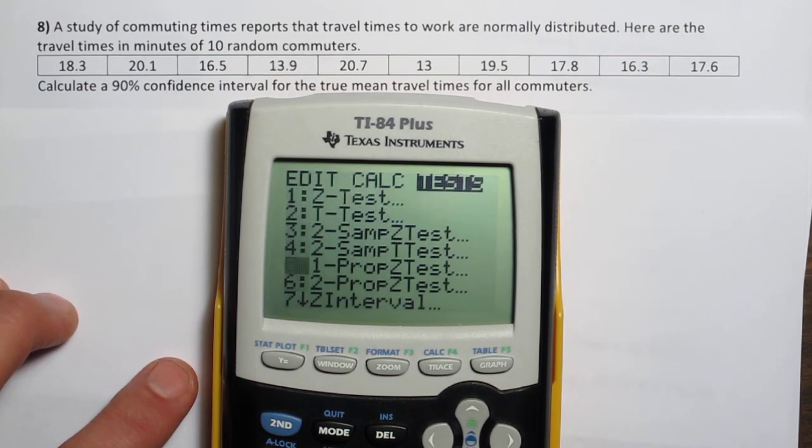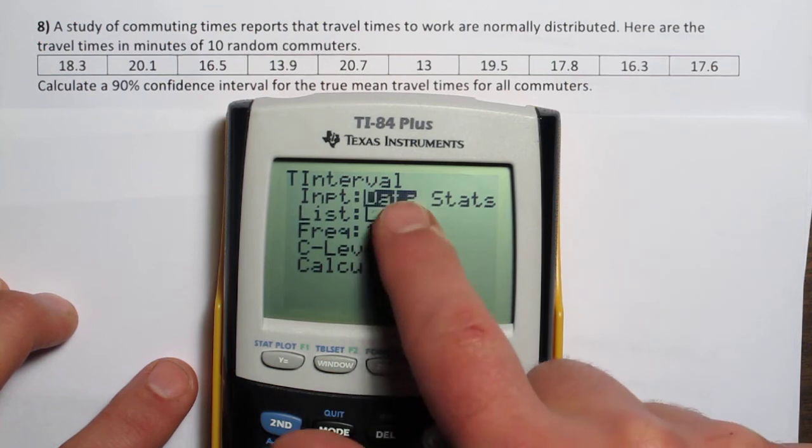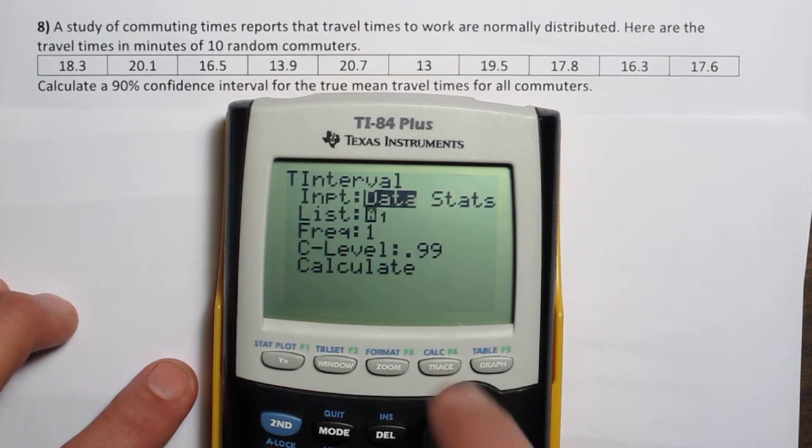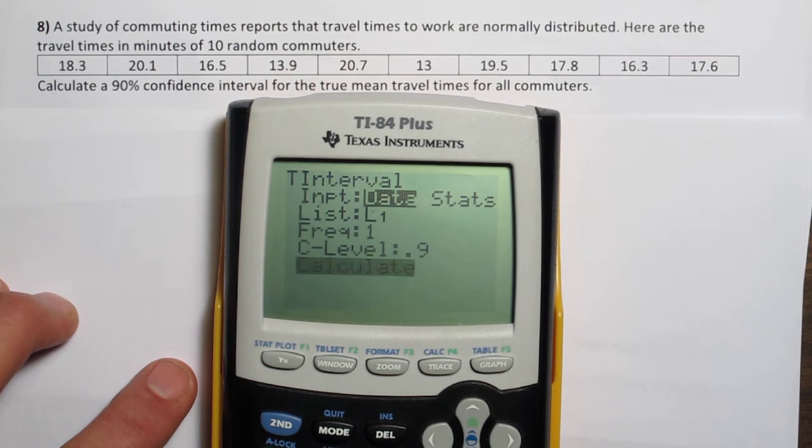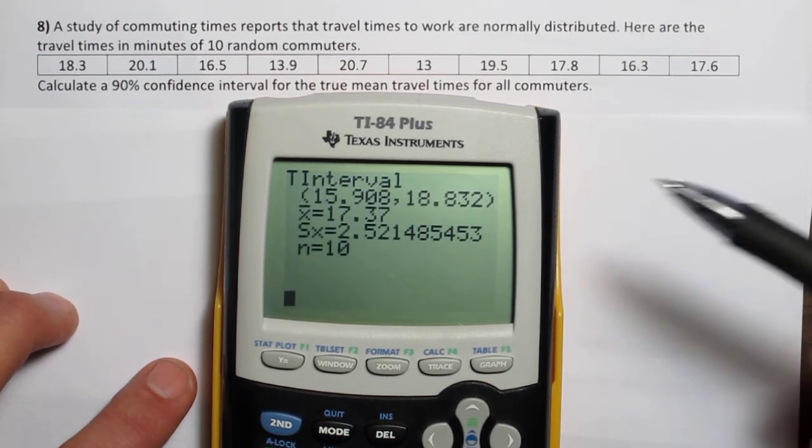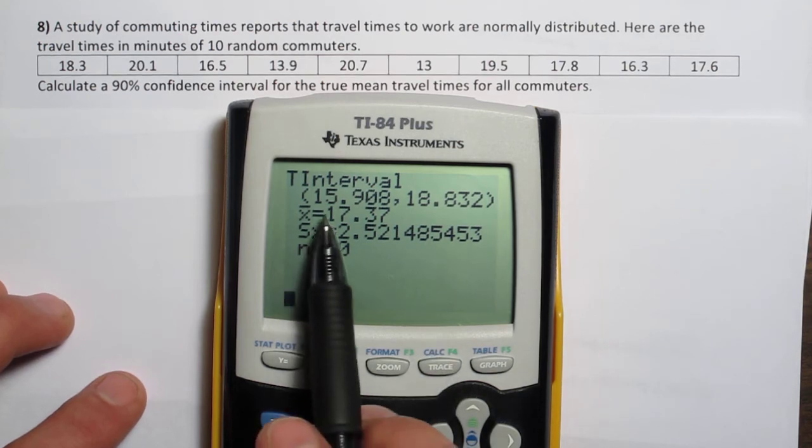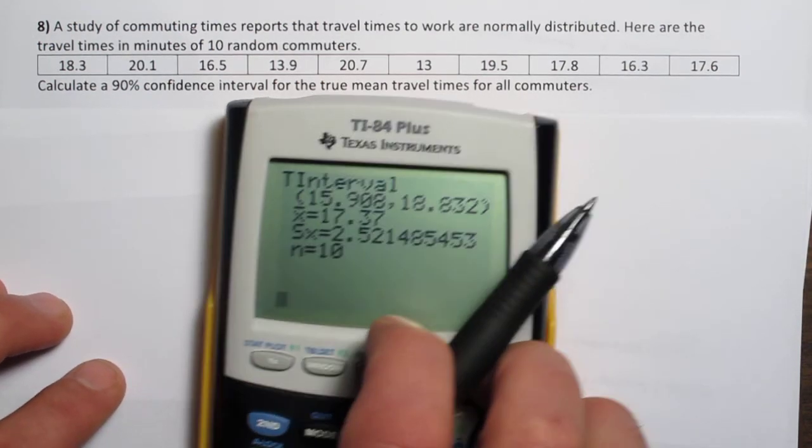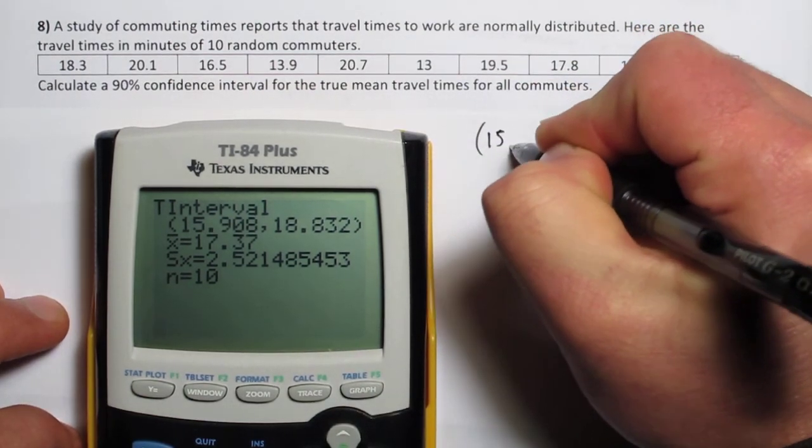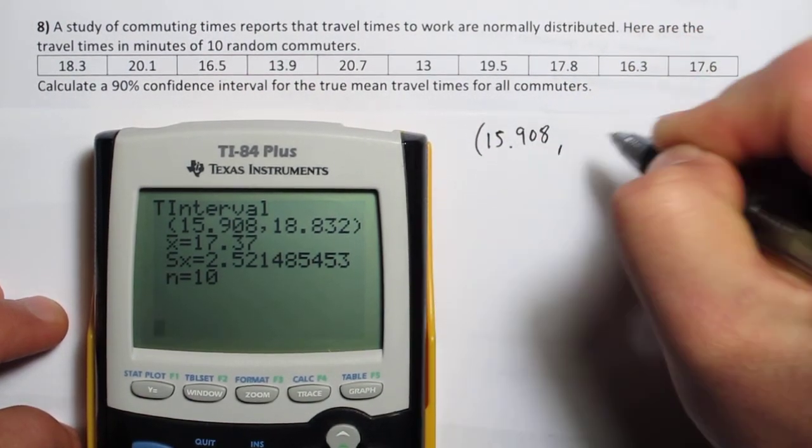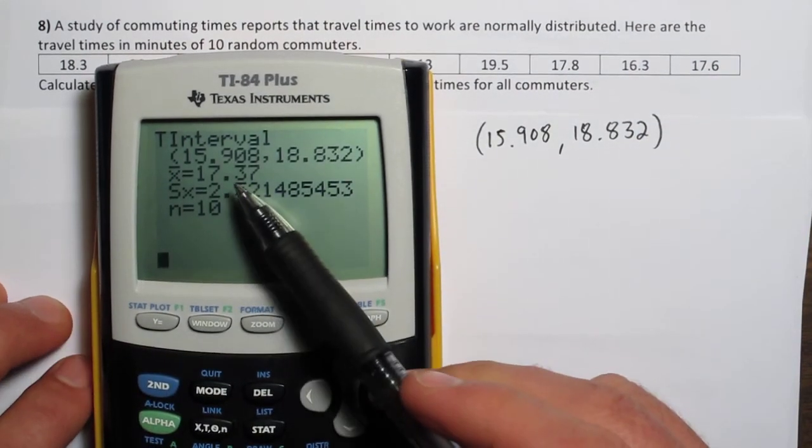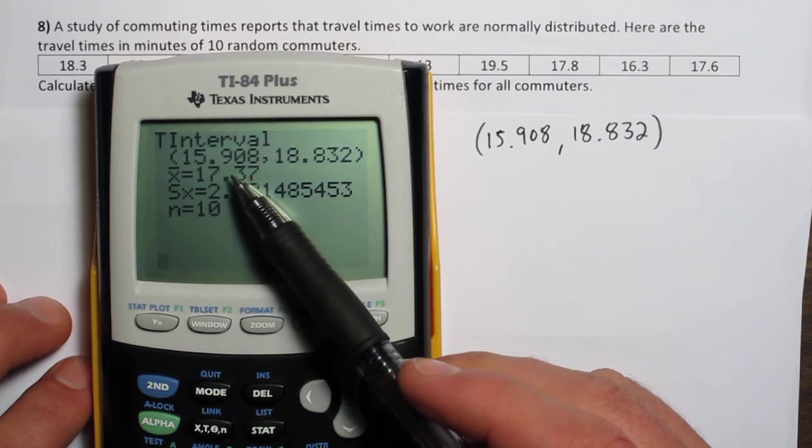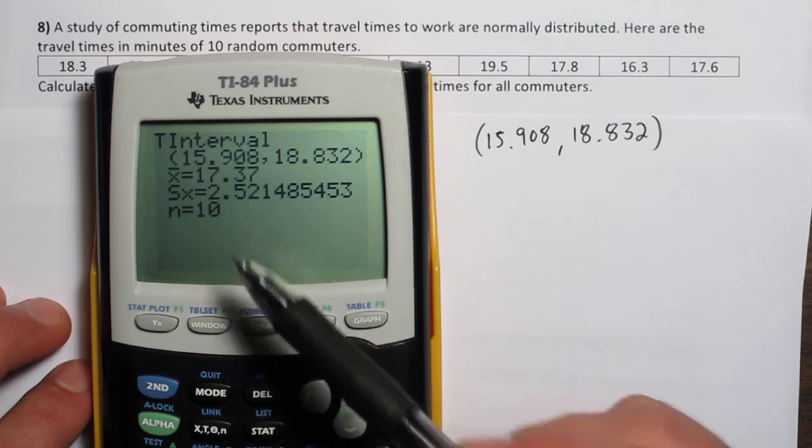By going to t-interval and for data, say please use list 1 as our data. Frequency means how many times do you want to use it, once, and the confidence level we want is a 90% confidence level. When we click calculate, it actually takes the calculator a brief time to think of all this stuff. So we get 15.908 to 18.832. And it also reports the other important information. There's where our confidence interval is centered and here's our sample standard deviation.